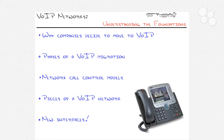In this video we're going to look at why a company might decide to move to Voice over IP. We'll then look at the phases they'll go through during that migration, how they can set up the network with different call control models, what the players and pieces of the VoIP network are, and finally we'll wrap up by talking about some of the new interfaces Cisco has created for their routers to interface with the legacy voice world.